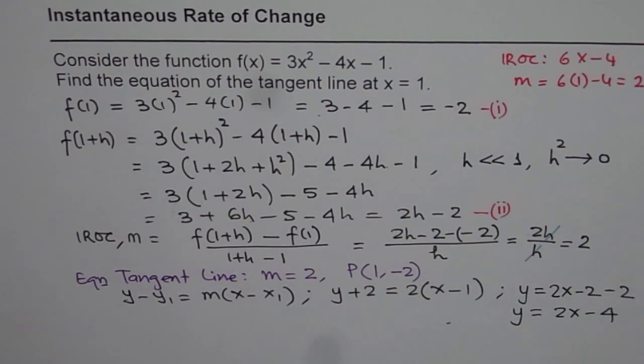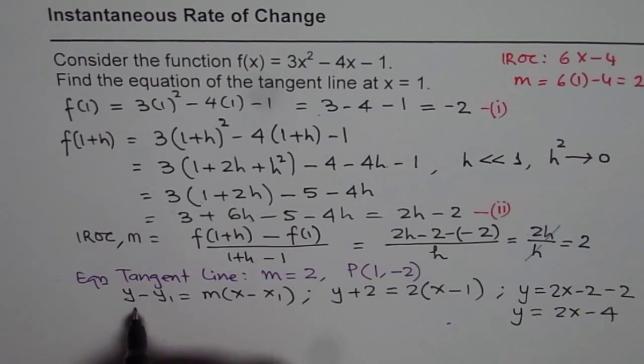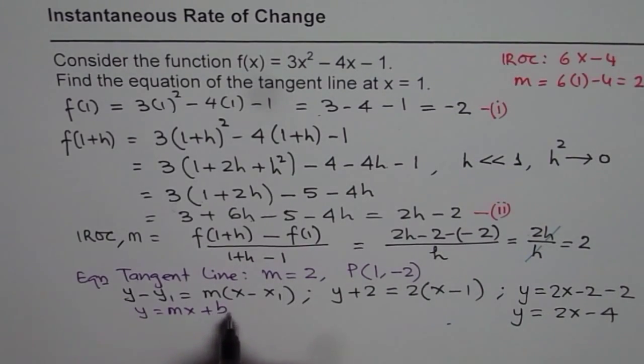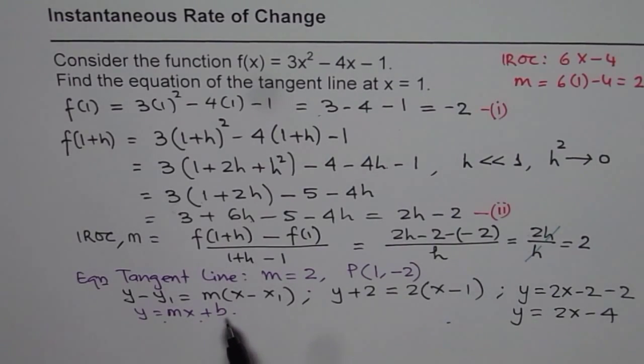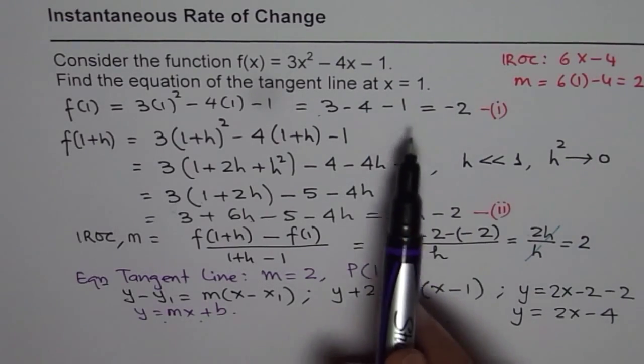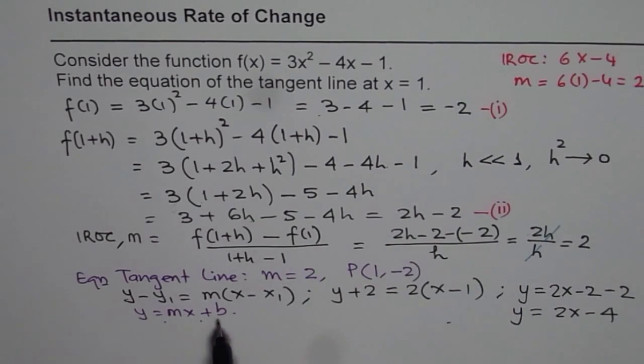Some of you who would like to use y = mx + b can also use this equation. Slope, you know, is 2, and then you can plug in the point 1 and -2, find the y-intercept and get your equation.